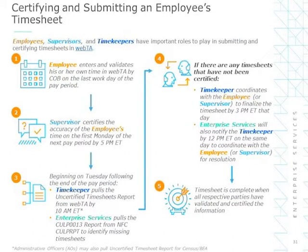Employees, supervisors, and timekeepers have important roles to play in submitting and certifying timesheets in WebTA. A supervisor certifies the accuracy of the employee's time on the first Monday of the next pay period by 5 pm ET. Then, beginning on the Tuesday following the end of the pay period, the timekeeper pulls the uncertified timesheet report from WebTA by 10 am ET. The timekeeper coordinates with the employee to finalize the timesheet by 3 pm ET that day. Enterprise Services will also notify the timekeeper by 12 pm ET on the same day to coordinate with the employee or supervisor for resolution.